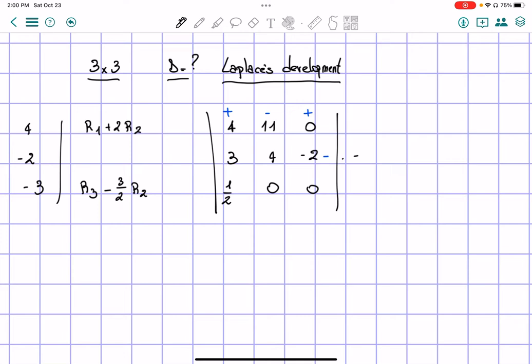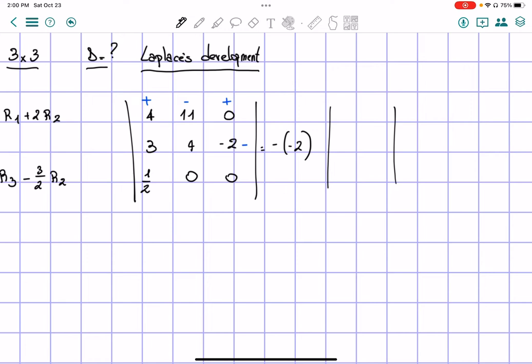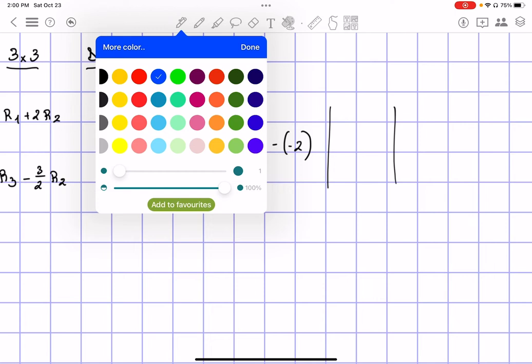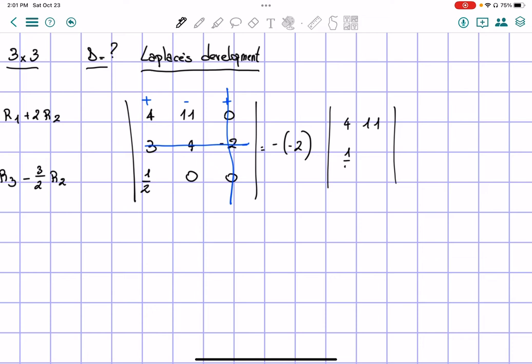So here we will have minus negative 2, and then let's take anything that wasn't in its column or its row. So its column or row are to be avoided. So we have 4, 11, 1 half, 0.